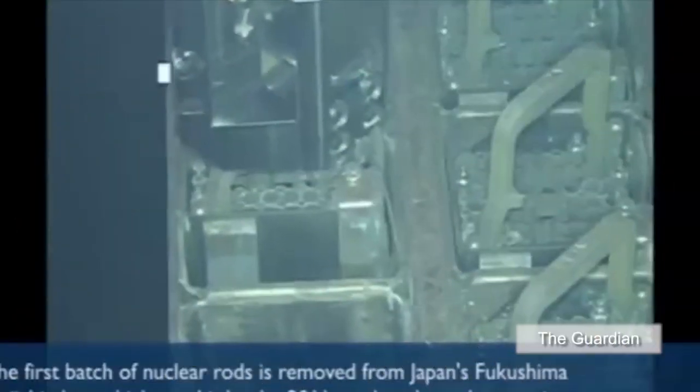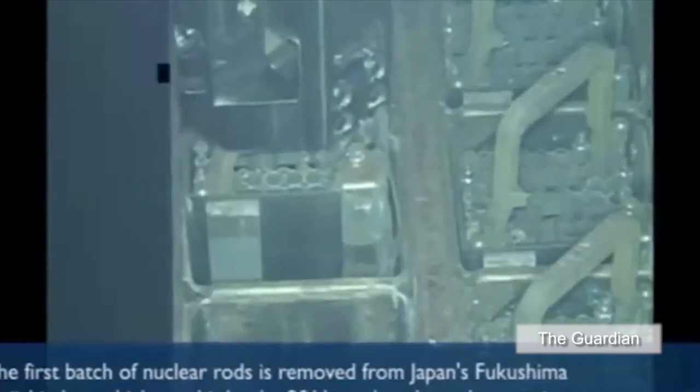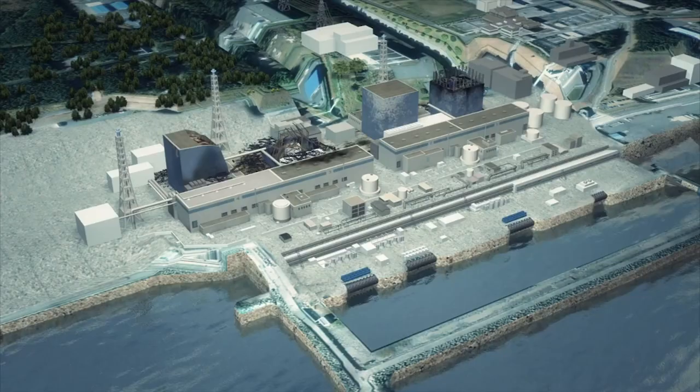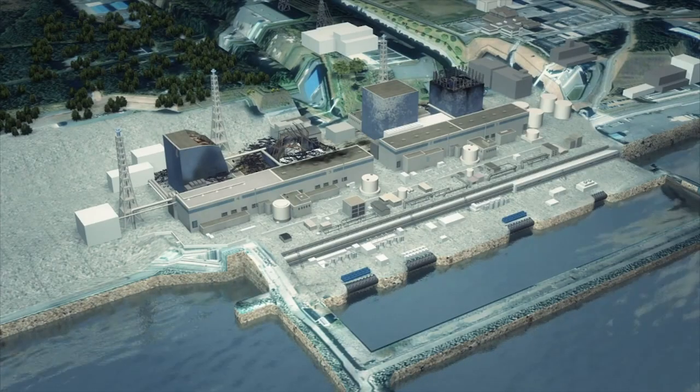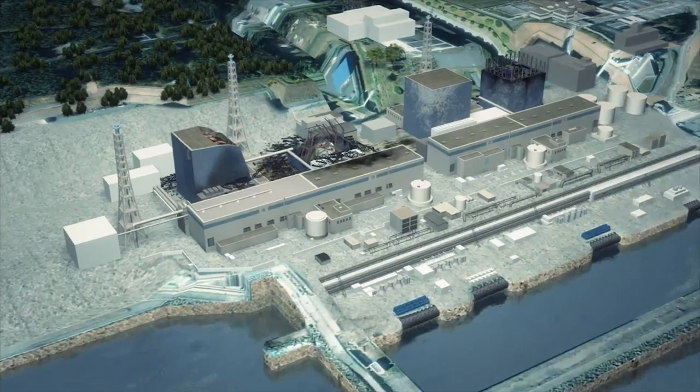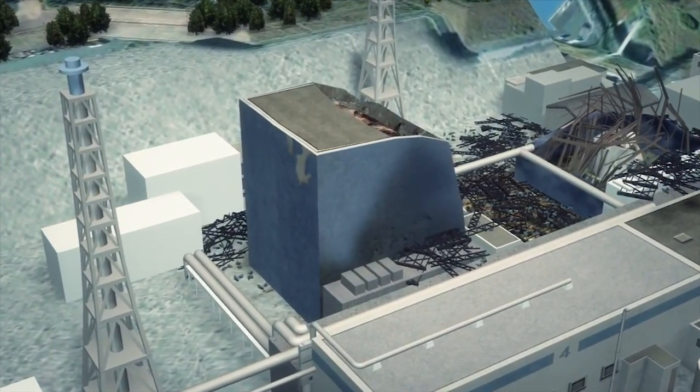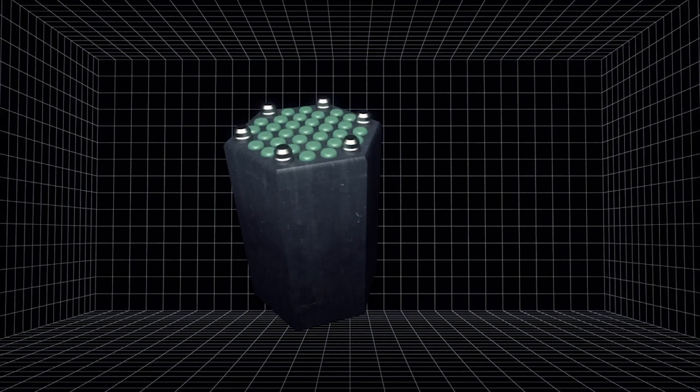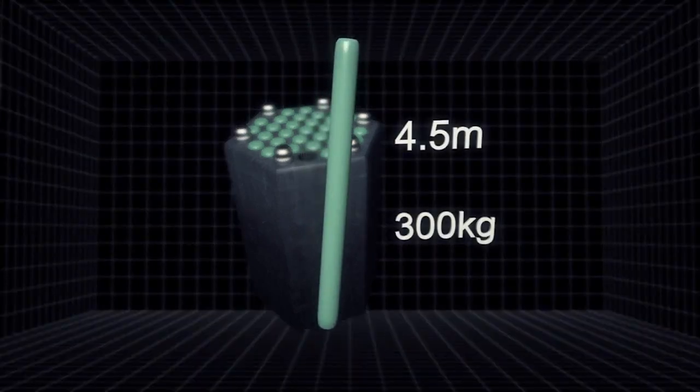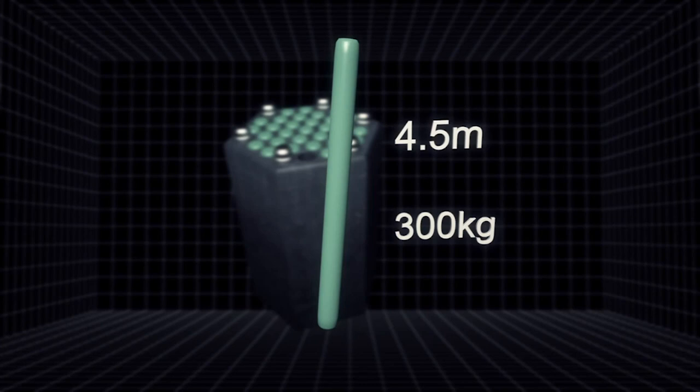TEPCO has begun removing used nuclear fuel rods from a corrupted reactor at the Fukushima Daiichi power plant. Reactor 4 sustained the most severe damage during the 2011 Tohoku earthquake and tsunami. It can no longer safely hold fuel rods. Each rod is 4.5 meters long and weighs 300 kilograms. Used rods continue to radiate heat and thus need to be stored in circulating water.